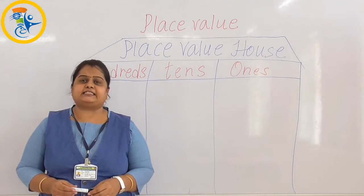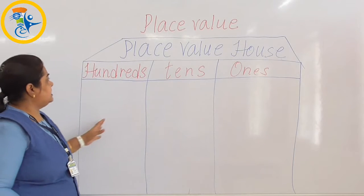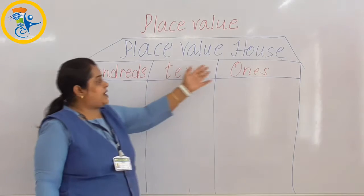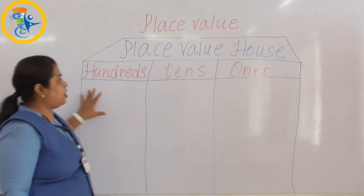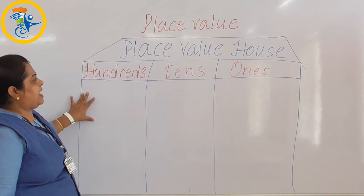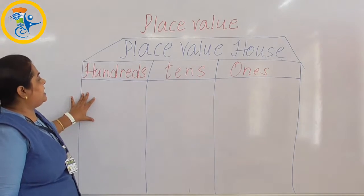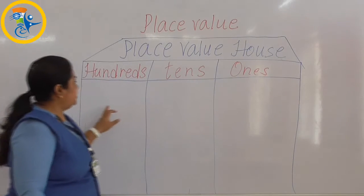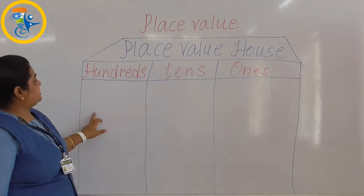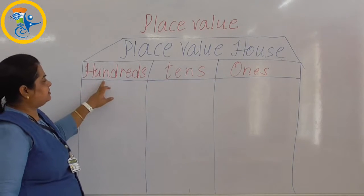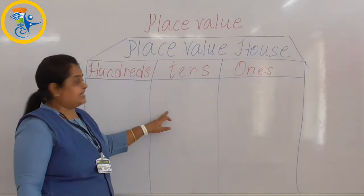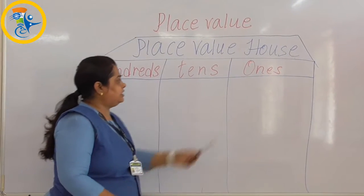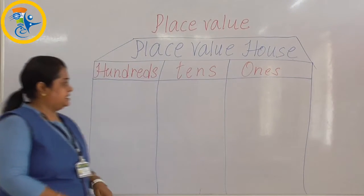So let's start. Now kids, if you see here, this is a place value house. This is a home of place value where I am having three rooms. The first one is hundreds, the second room is tens, and the third room is ones.